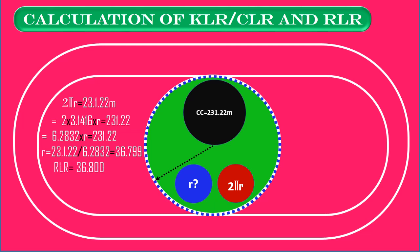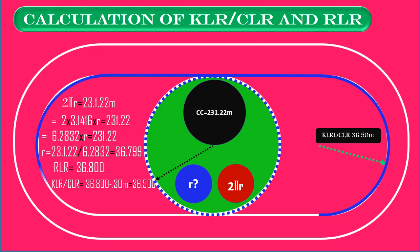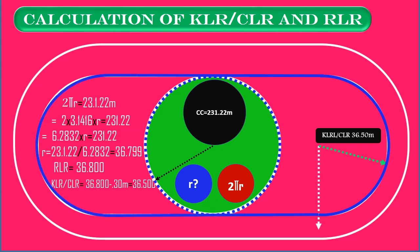The Running Line Radius (RLR) is 36.80 meters. By subtracting 0.30 meters, we get the KLR, the Curb Line Radius. The Curb Line Radius is 36.50 meters. This is the KLR of 36.50 meters and this is the RLR of 36.80 meters.